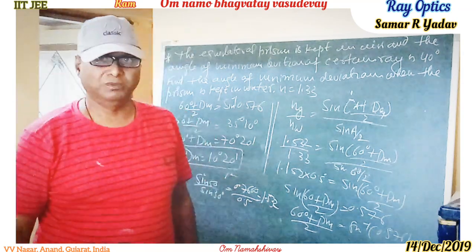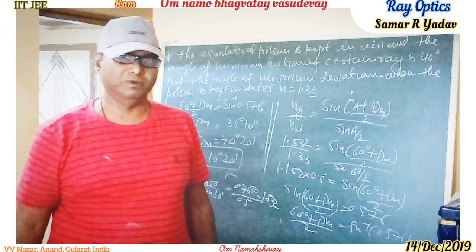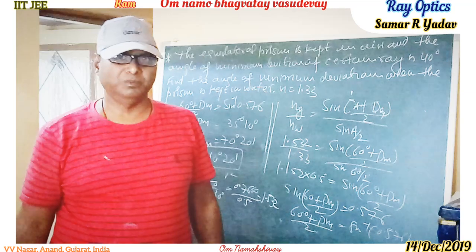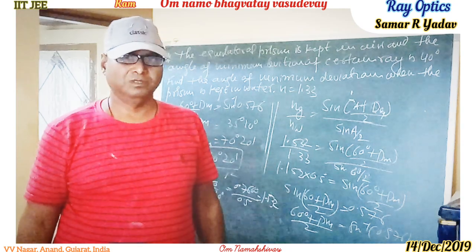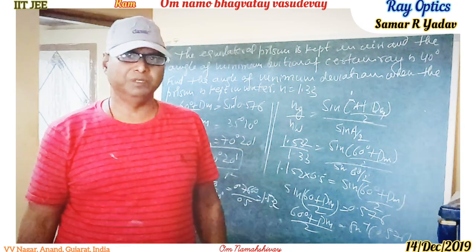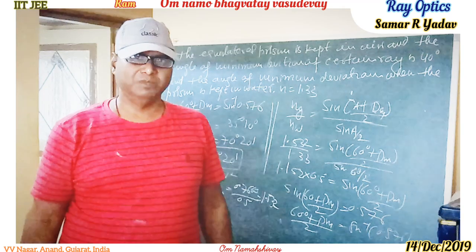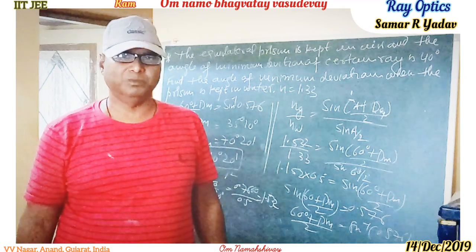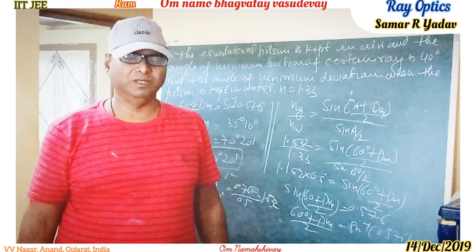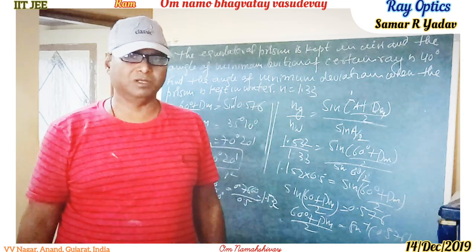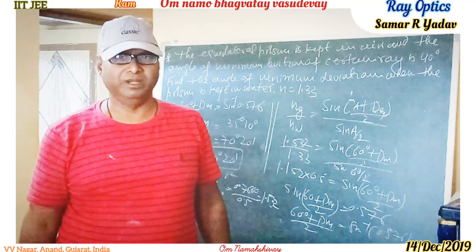So this is how we solved this problem. We used the formula μ_g upon μ_a equals sin((A + δm) / 2) upon sin(A/2), with A = 60° and minimum deviation = 40°, to get refractive index 1.532. Then placing the prism in water, using μ_g upon μ_w, we calculated the new minimum deviation to be 10 degrees 20 minutes. Thank you very much.